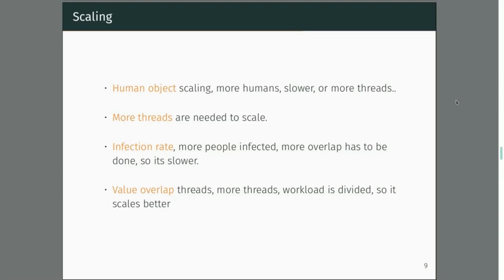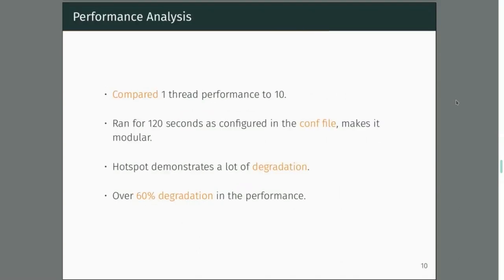More humans means slower performance since they share the same threads. On the other hand, more threads scales better and becomes faster. For infection rate, we also noticed that more infected people means more overlap work for the physics engine to handle collisions, so the FPS goes down — which is expected. When the work is divided across more threads, it scales better and becomes faster, depending on how you play around with the configuration file.